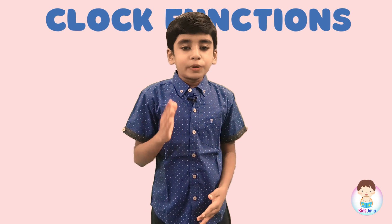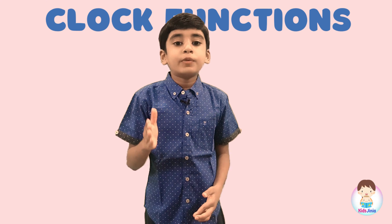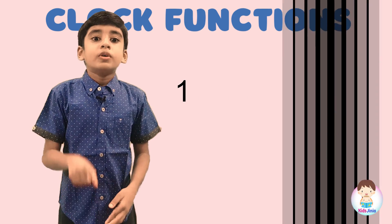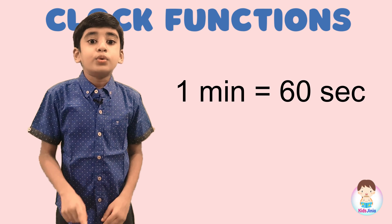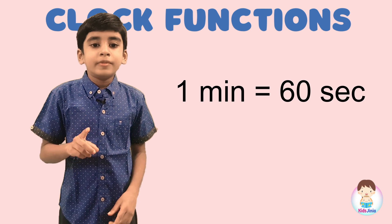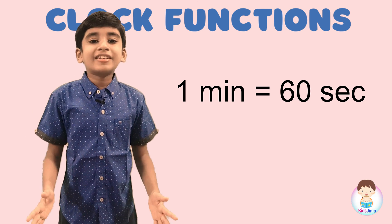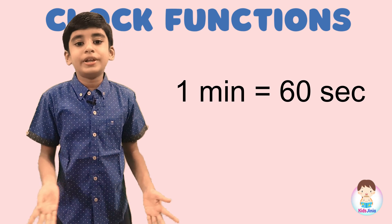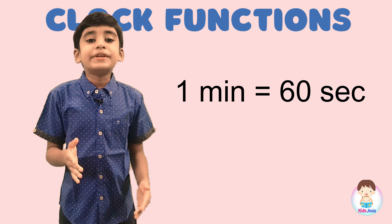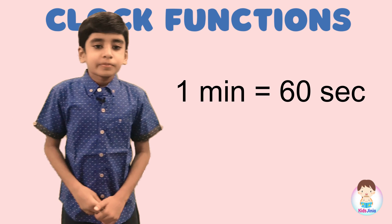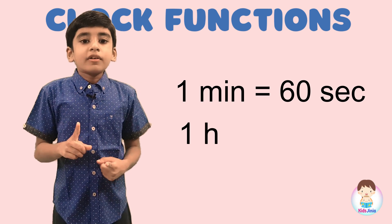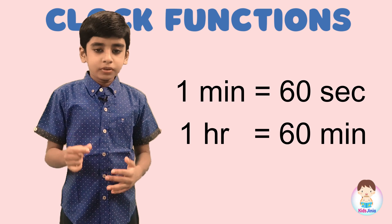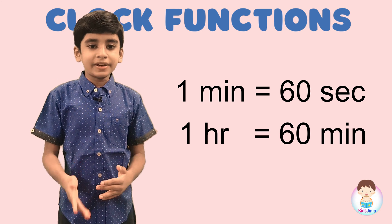We are going to convert the smaller units to bigger units. 60 seconds is equal to one minute. That means if 60 seconds are completed, then we can understand one minute is completed. The next big unit is hour. One hour is equal to 60 minutes. If 60 minutes are completed, then we can understand one hour is completed.